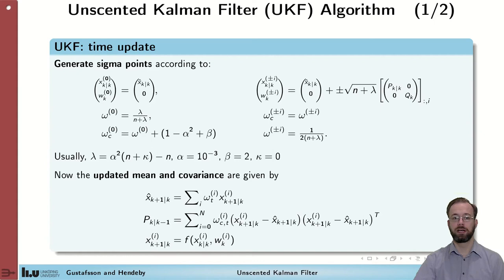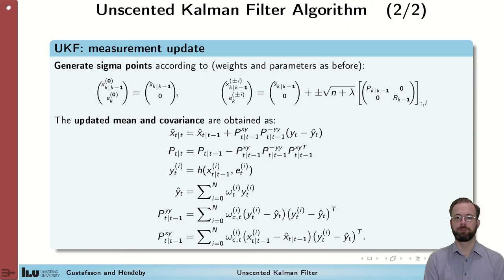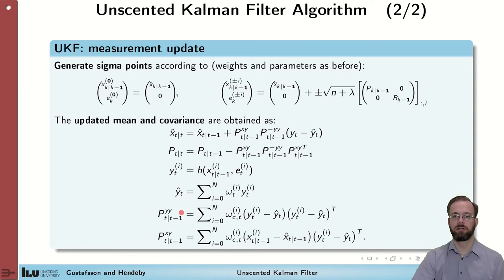Once we have sigma points for the current state, we obtain sigma points for the predicted state by inserting these sigma points into the dynamic model for the problem. With these predicted sigma points, we compute the mean and covariance of the state estimate as the weighted mean and weighted covariance of the sigma points. The measurement update is similar. We start by generating sigma points for the predicted state and the measurement error, then compute sigma points for the expected measurement. From these, we compute the mean and covariance of the expected measurement as weighted sample mean and weighted sample covariance.